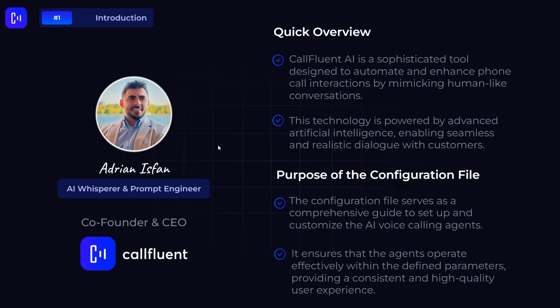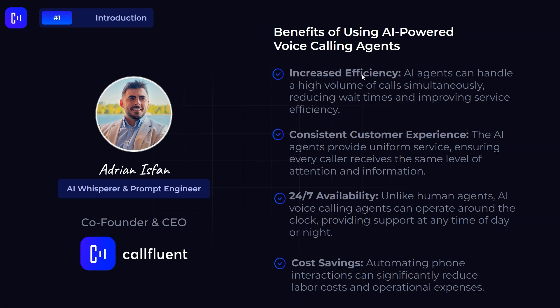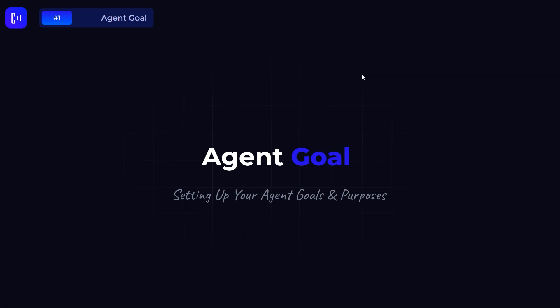Colflant AI is a sophisticated tool designed to automate and enhance phone call interactions by mimicking human-like conversation. Powered by advanced AI, it enables seamless and realistic dialogue with customers. The benefits include: increased efficiency — AI agents can handle a high volume of calls simultaneously, reducing wait times; consistent customer experience — every call receives the same level of attention; 24/7 availability — unlike human agents, AI operates around the clock; and significant cost savings by reducing labor and operational expenses.